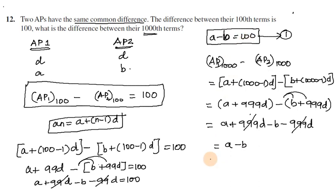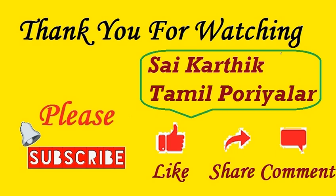Since A minus B equals 100 (from the 100th term condition), the difference between the 1000th terms is also 100. So the 1000th term difference equals 100. Thank you.